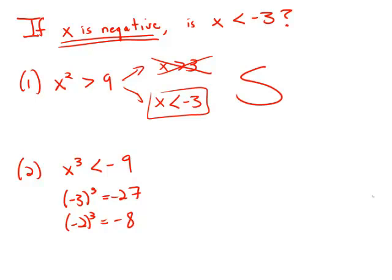And so if we squared a decimal between 2 and 3, so for example, say negative 2.5 cubed, that's going to be something that will be somewhere between 8 and 27. And it's definitely going to be more negative than negative 9.